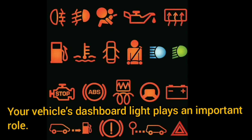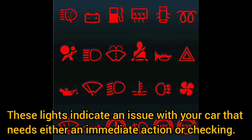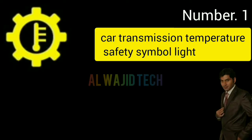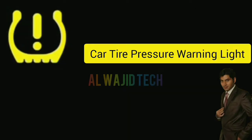Your vehicle dashboard lights play an important role — these lights indicate an issue with your car that needs either immediate action or checking. Number one: Car transmission temperature light. The transmission temperature indicator means the engine temperature has exceeded normal limits. Check coolant level, fan operation, radiator cap, and coolant leaks.